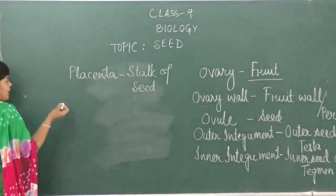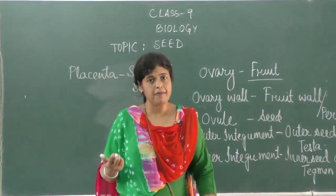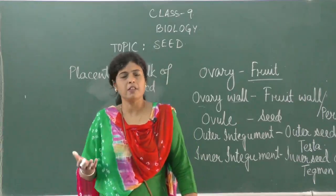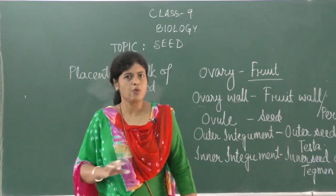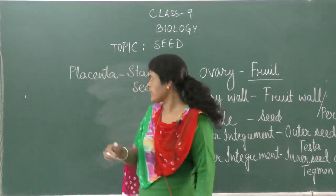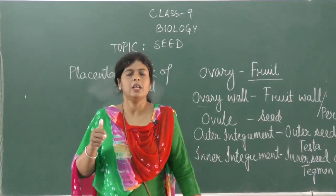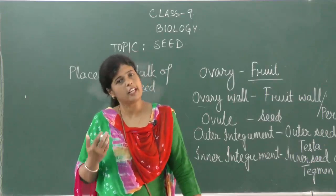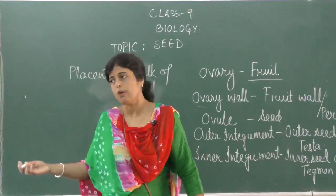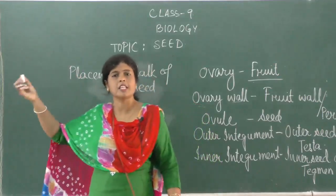Which structures are not found after fertilization? The calyx may or may not remain — it remains in tomato, chilies, and brinjal, but falls off in mango and jackfruit. Corolla and stamen fall off. Of the pistil, only the ovary part remains; the stigma and style fall off.